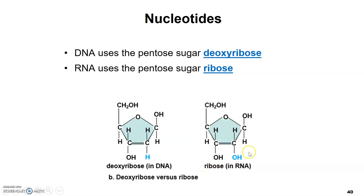Ribose, the RNA sugar, has one, two, three, four, five carbons and has an OH group — an oxygen and a hydrogen — on this carbon. What you'll notice about deoxyribose is it doesn't have the oxygen in that same position; it's deoxygenated. You don't have to know the full structures of these two molecules, but you do need to know that the sugar in DNA is deoxyribose and the sugar in RNA is ribose. That is one main difference between the two nucleic acids.